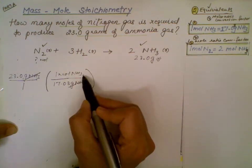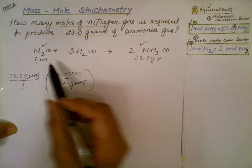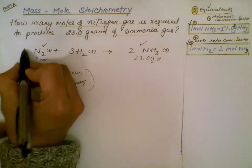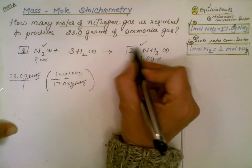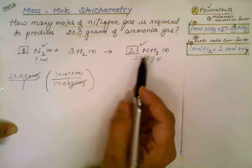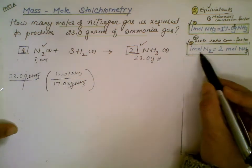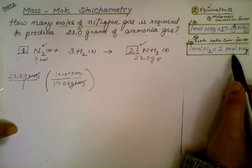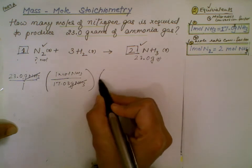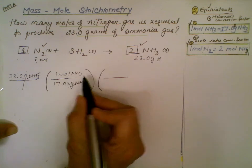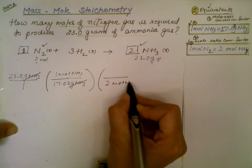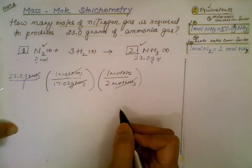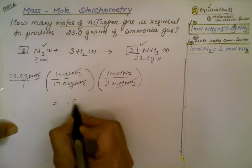We want to convert moles of ammonia to moles of nitrogen. We use the balanced equation to compare mole ratios: for one mole of nitrogen consumed, we produce two moles of ammonia. So we write the fraction with moles of nitrogen at the top (unknown) and moles of ammonia at the bottom (known), and cancel. When you calculate this, you get 0.7527.